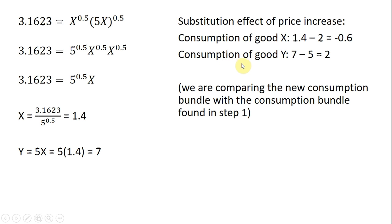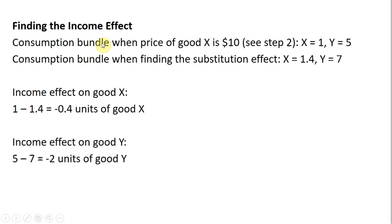The substitution effect on good Y is plus 2 units. So because of the price increase, the substitution effect leads the consumer to cut back on good X by 0.6 units and consume 2 more units of good Y. We are comparing the new consumption bundle — 1.4 and 7 — with the consumption bundle found in step 1.